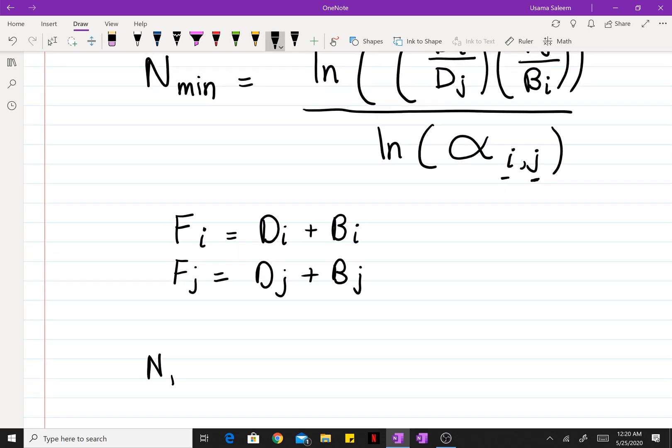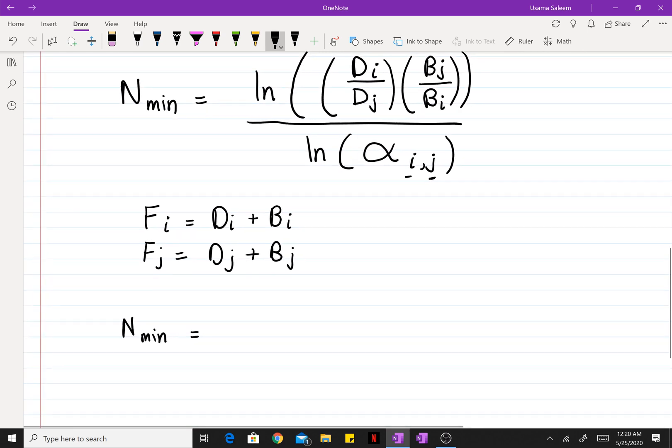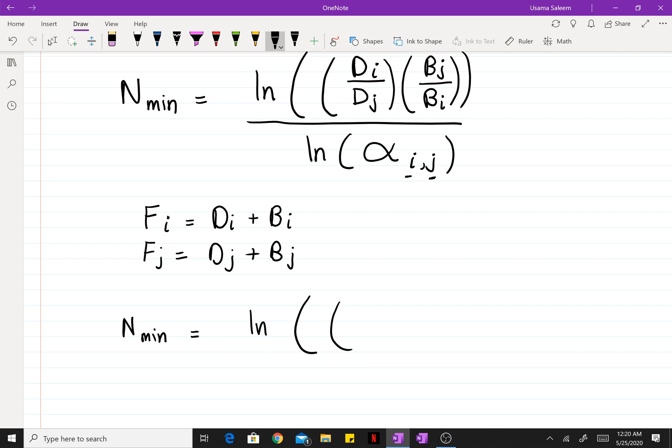Now, let's rewrite the Fenske equation in terms of just the distillate flow rates. Natural log of DI divided by DJ times FJ minus DJ divided by FI minus DI, divided by the natural log of alpha I with respect to J.